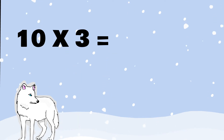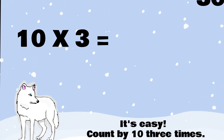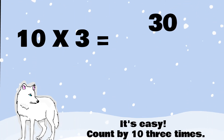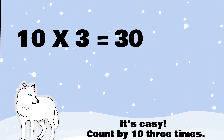What does 10 times 3 equal? It's so easy. Just count by 10 three times: 10, 20, 30. 10 times 3 equals 30.